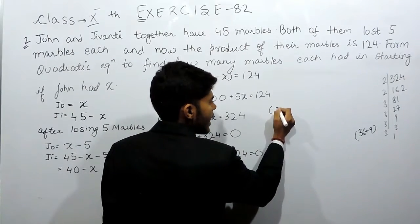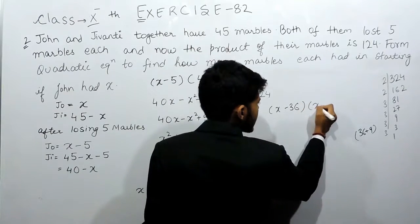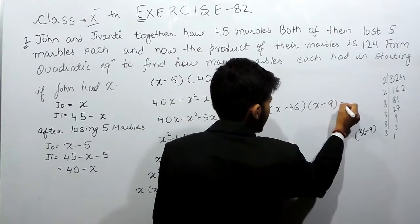The factors will be x minus 36 and x minus 9 equals to 0.